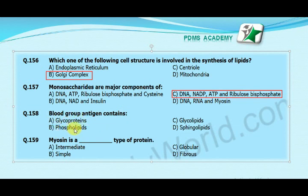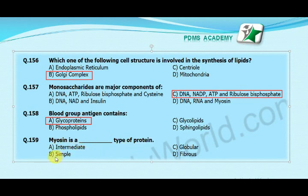The correct answer is A, glycoproteins. Myosin is a type of protein: option A intermediate, option B simple, option C globular, option D fibrous. The correct answer is D, fibrous.